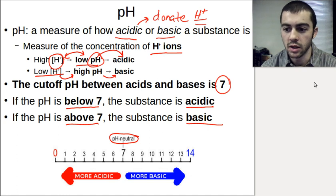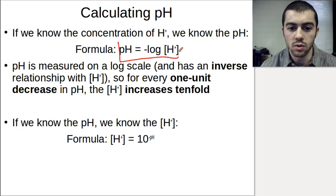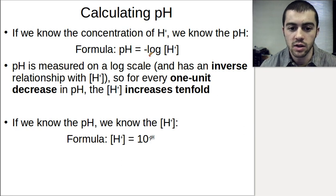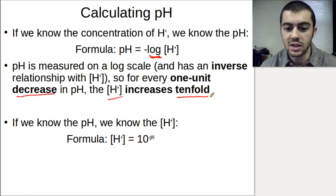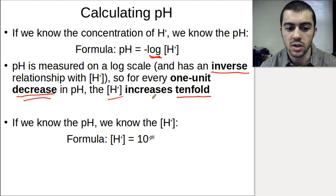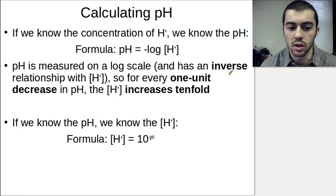To calculate pH, we use the concentration of H⁺ ions. The formula is: pH = −log[H⁺]. pH is measured on a log scale, meaning that for every one unit decrease in pH, the H⁺ concentration increases tenfold — it's not a one-to-one relationship. The negative sign accounts for the inverse relationship between pH and H⁺ concentration.